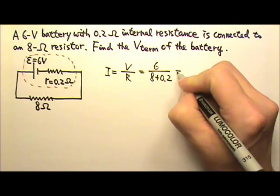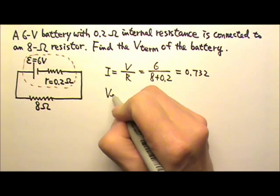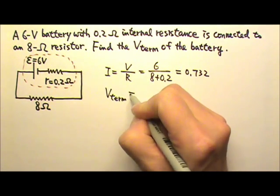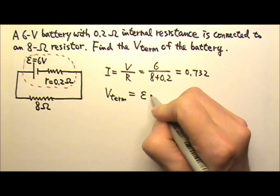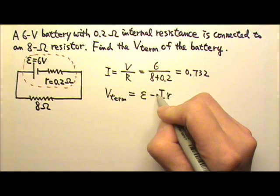So the current in the circuit would be 0.732. And so the terminal voltage of this battery is the EMF minus the voltage drop across the internal resistance, I times R.